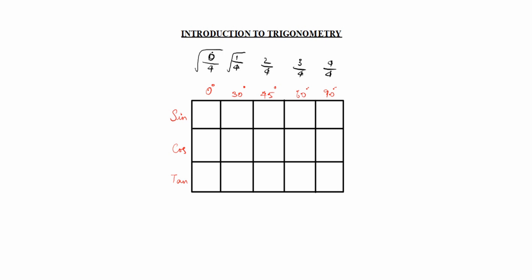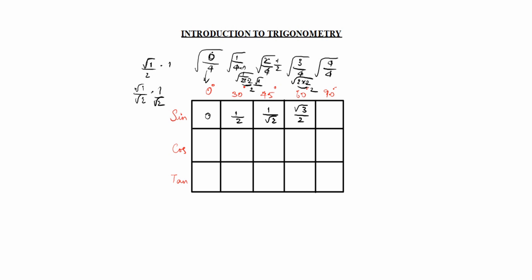Take the square root: √(0/4) = 0. √(1/4): since 4 = 2×2, we get 1/2. √(2/4) = √(1/2) = 1/√2. √(3/4) = √3/2. √(4/4) = √1 = 1. So sin values for 0°, 30°, 45°, 60°, 90° are: 0, 1/2, 1/√2, √3/2, 1.